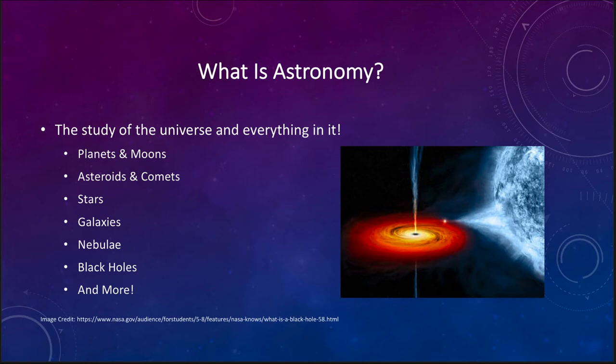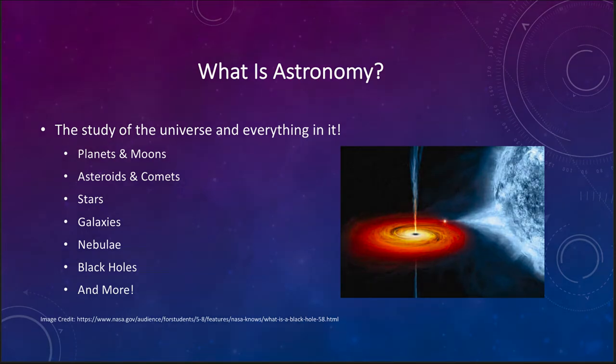Nothing escapes from a black hole because nothing can travel faster than light. However outside what we call the event horizon, the point from which light can no longer escape, we call that the event horizon.